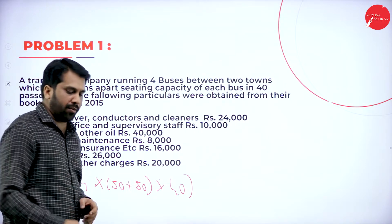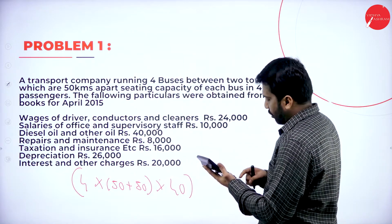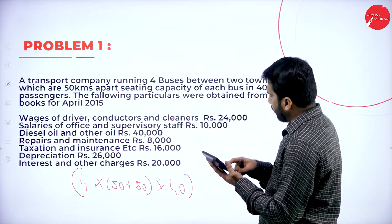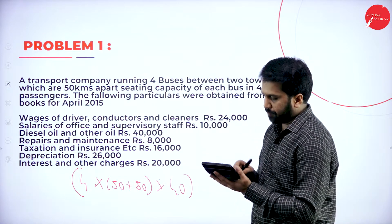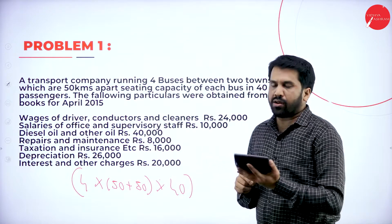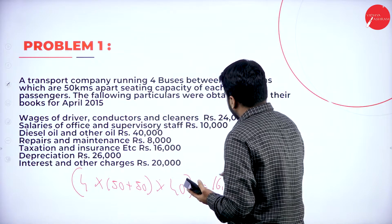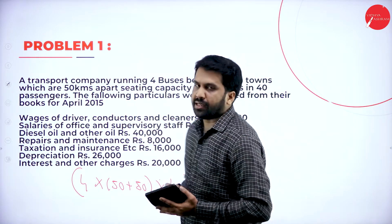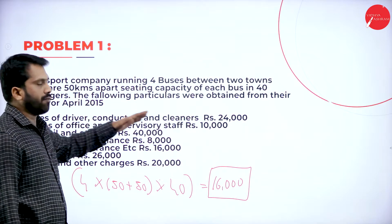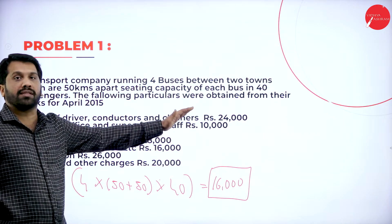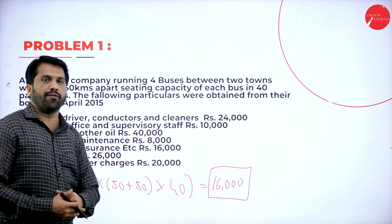These are the calculations we have. It will be 4 into 100 into 40 passengers — I got 16,000. This is your passenger-kilometer, total passenger-kilometer. They have not mentioned number of trips and they have not mentioned percentage. That's why we go directly with 4 × 100 × 40.